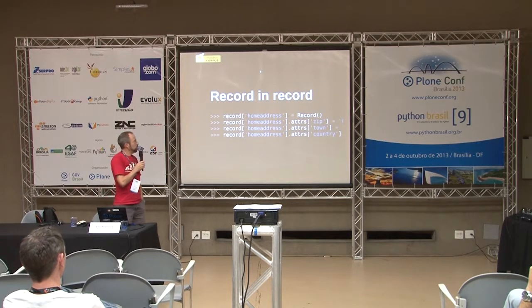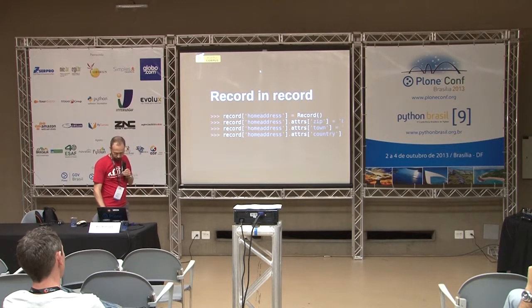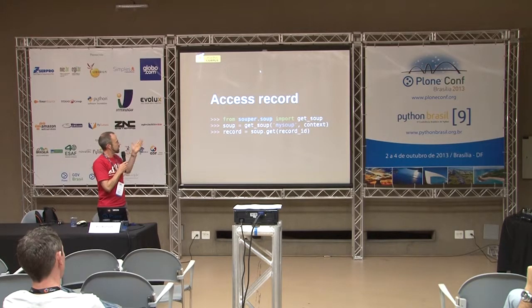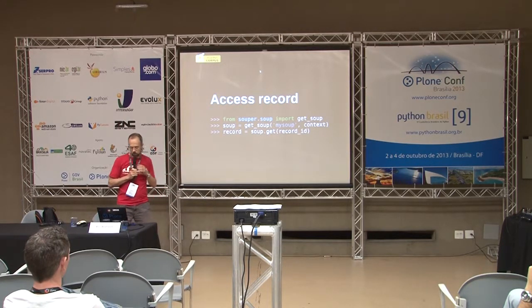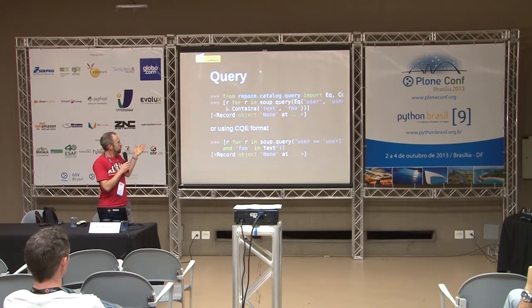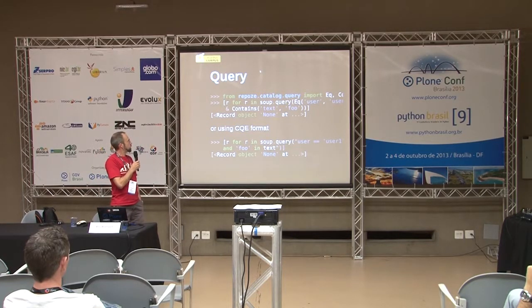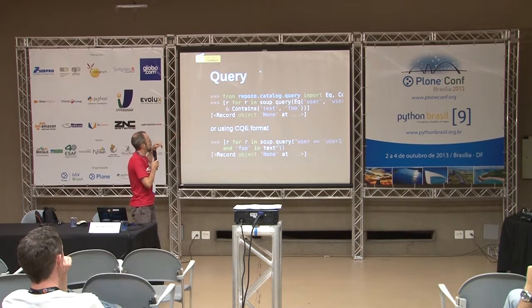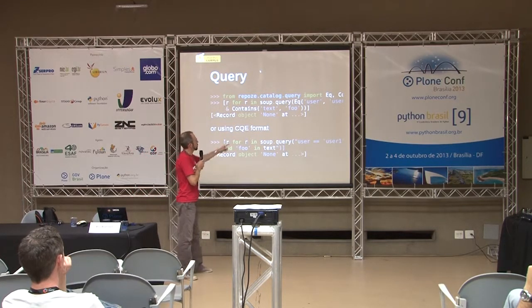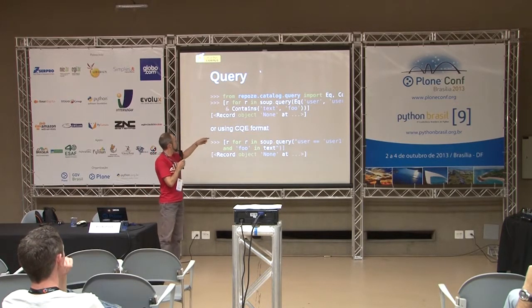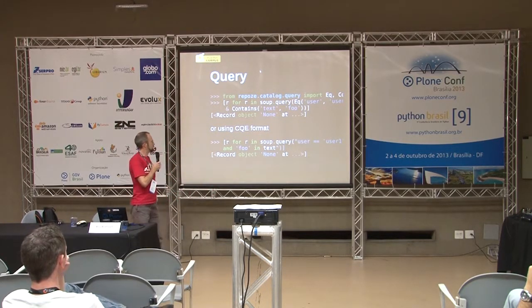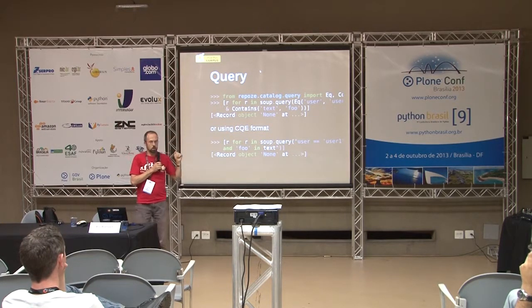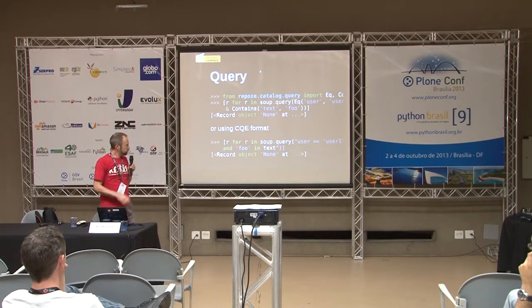You can have a record inside a record — no problem. So here, my record address is going to have secondary attributes. And you can access your record very easily: you get your Soup and get your record by its ID. Then you can query your data using Repoze Catalog. You can write a query using keywords, or you can also use a CQL format, which is much easier to read — like user equals user_one and foo in text, and you're done. It returns records, can be run in lazy mode, and it's very, very efficient.